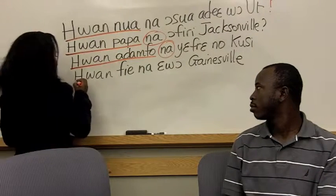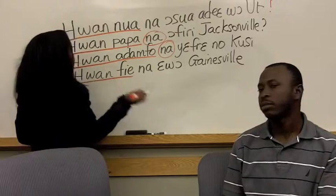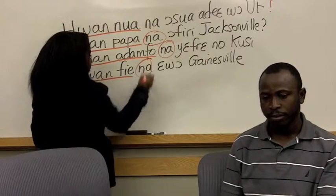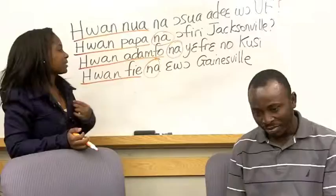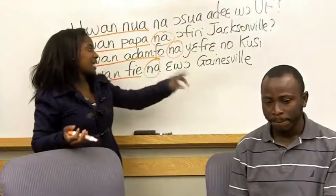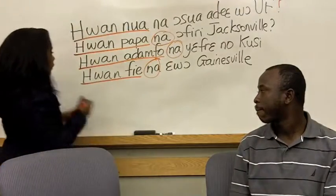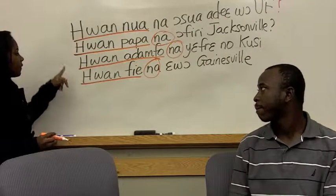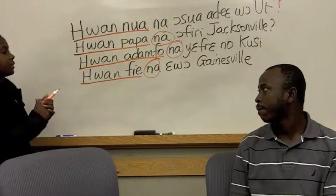For whine piye, meaning 'whose house,' you put na afterwards. And then ewo Gainesville means 'it is located in Gainesville.' So if you put that all together, you have 'whose house is located in Gainesville.'